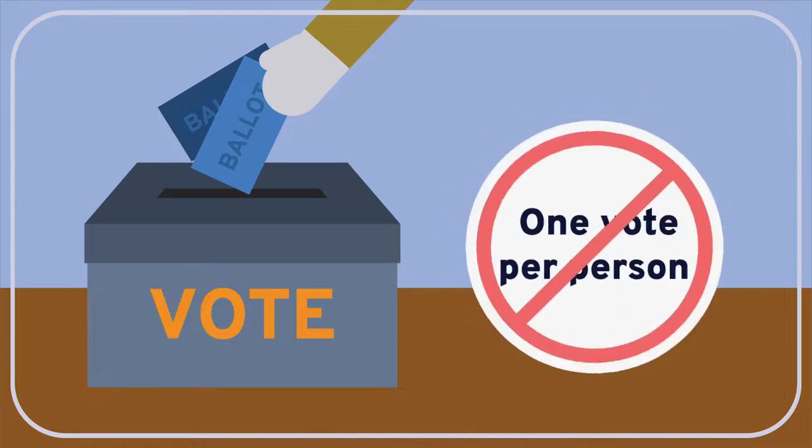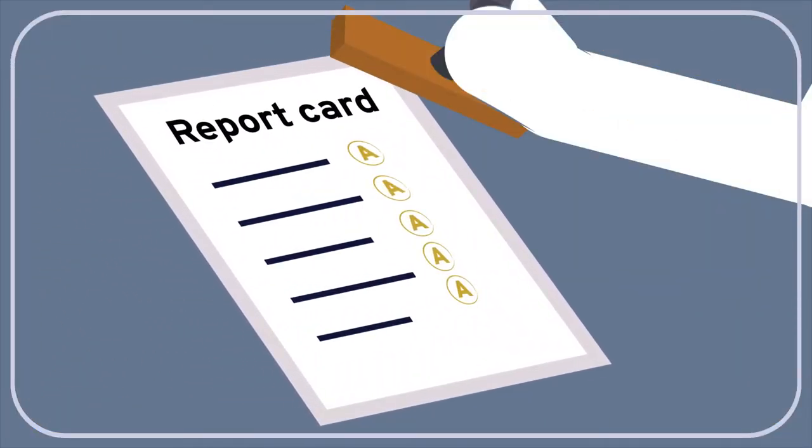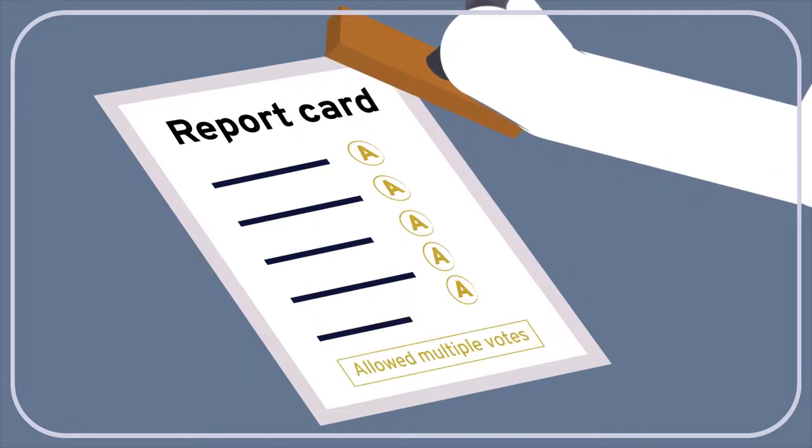And third, he denied the principle of one person, one vote. Instead, he thought that people with particularly high levels of educational achievement should be given multiple votes.